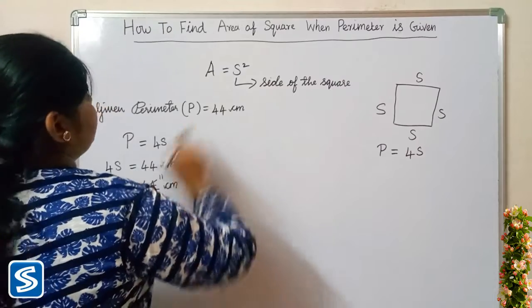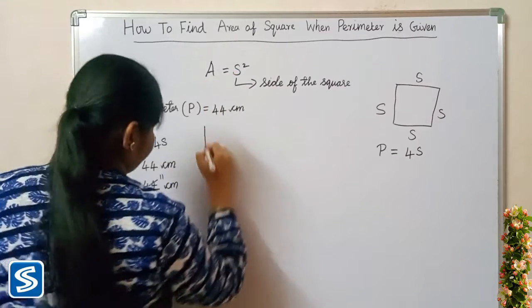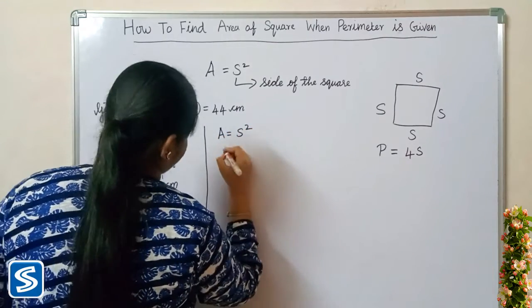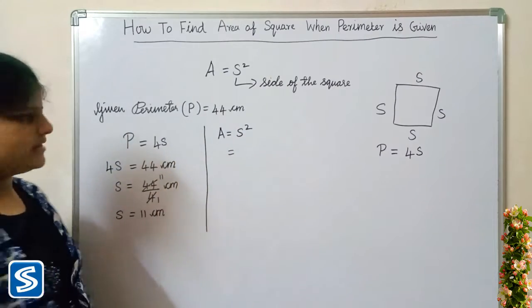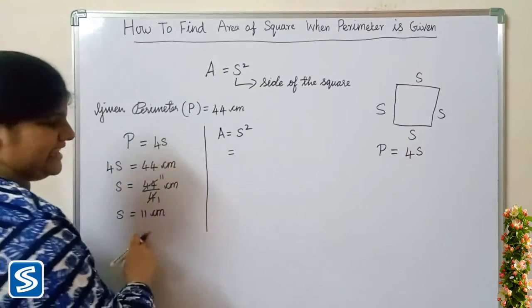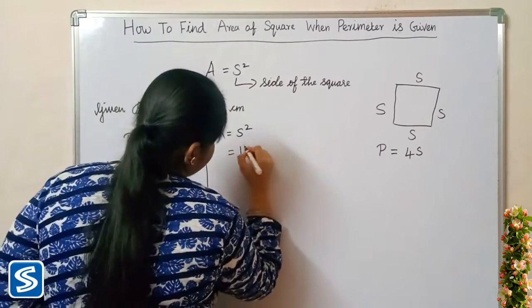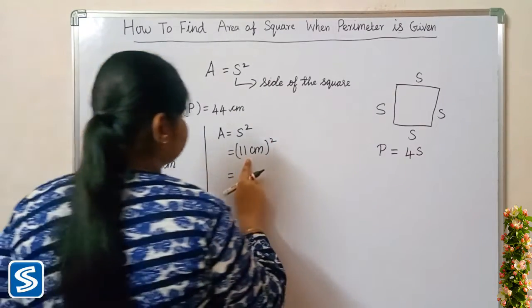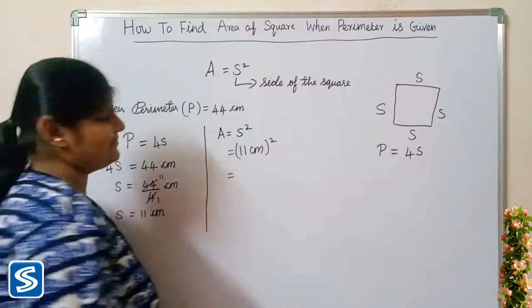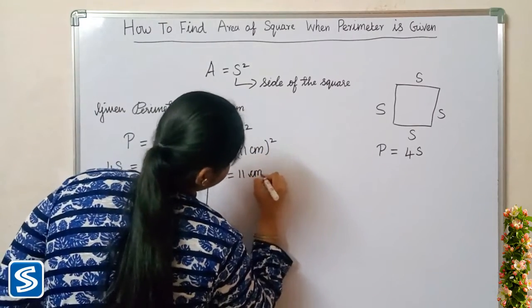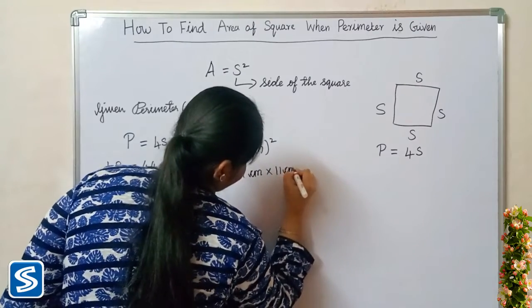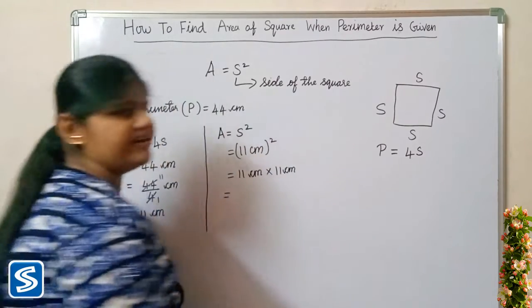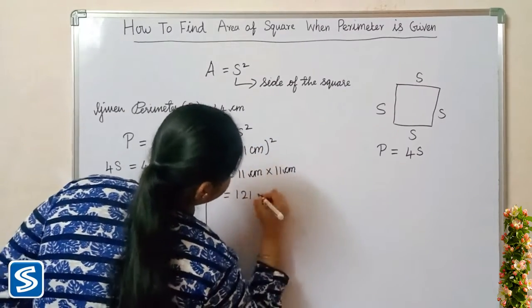Now we have to substitute this value in the formula. So area A is equal to S squared. Here the value of S is 11 centimeters, so we have 11 centimeters whole square, which can be written as 11 centimeters multiplied by 11 centimeters. 11 centimeters multiplied by 11 centimeters will be 121 centimeters square.